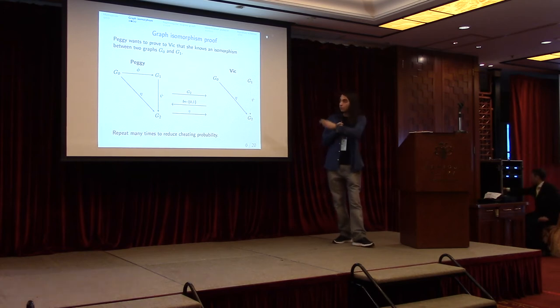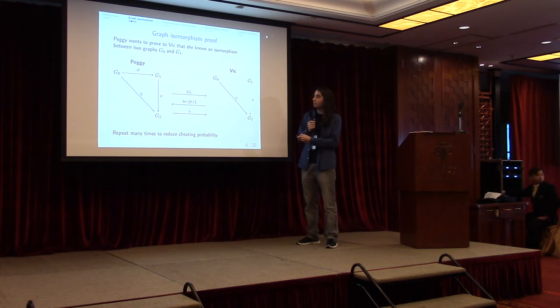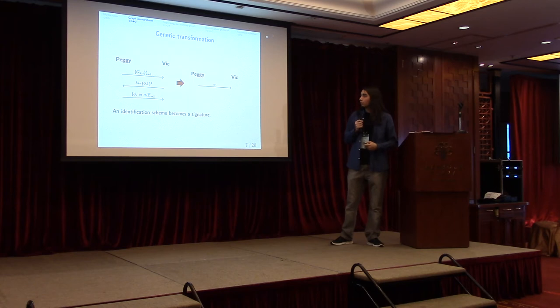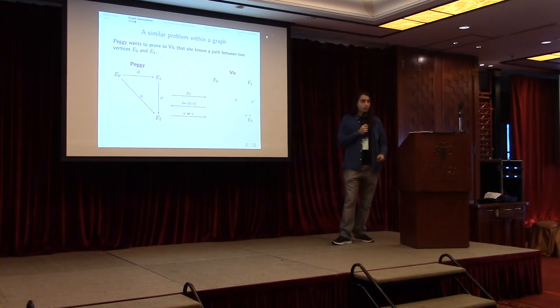And what about the other property? We want this interaction to reveal nothing about the secret. And intuitively, that happens because when the bit is 0 we're just revealing this vertical isomorphism which is independent from the secret. And in the other case we're revealing the composition, and this part is essentially masking this one. So we have the zero knowledge property. After that we have built an identification scheme, and there's a standard way to produce a signature scheme from that using transformation like Fiat-Shamir. We can use it to produce signatures from identification schemes.